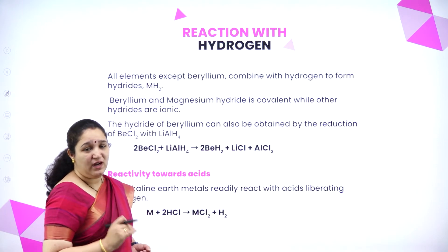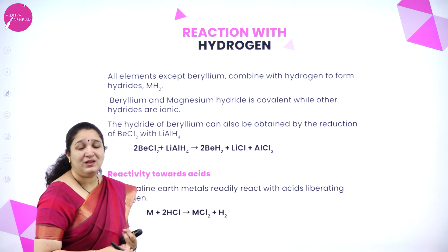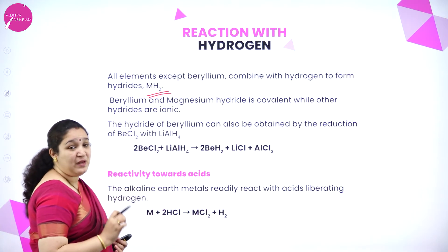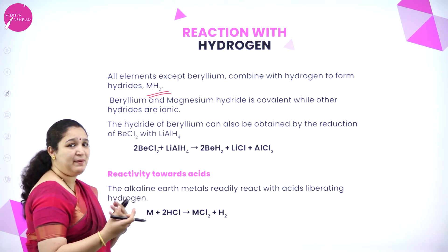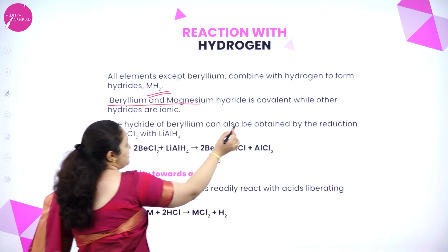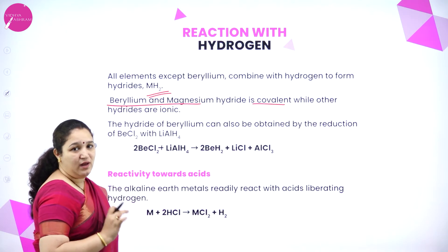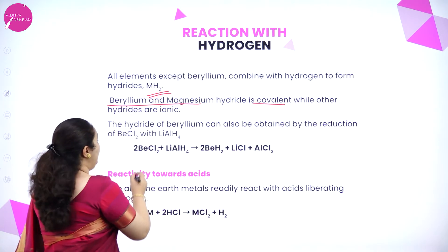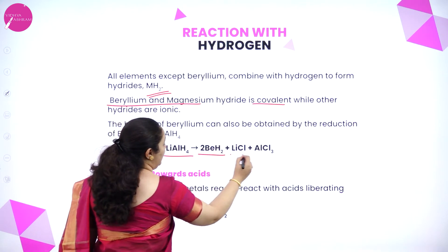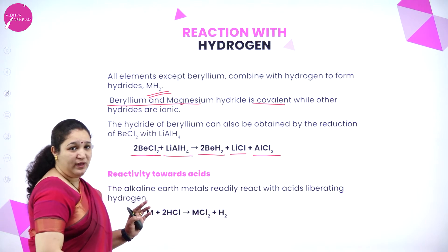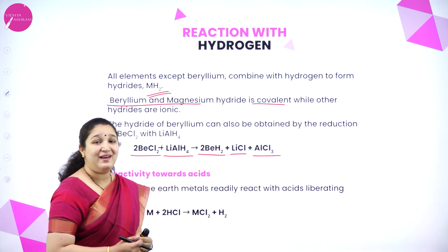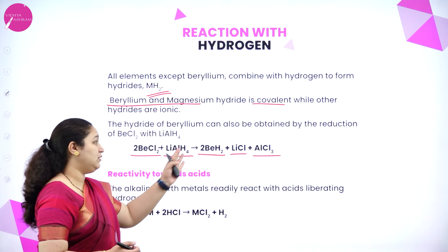Next is reaction with hydrogen. Except for beryllium, all other alkaline earth metals react with hydrogen to form hydrides of formula MH₂. Beryllium hydride does exist but is not prepared directly by reaction with hydrogen; instead, beryllium chloride is treated with lithium aluminium hydride to get beryllium hydride, lithium chloride, and aluminium chloride. Beryllium and magnesium hydrides are covalent, while the rest are ionic hydrides.